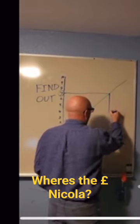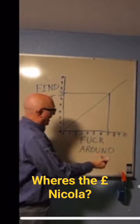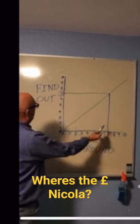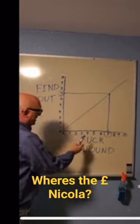I'm going to come straight down to where it intersects with my fuck around line. Now, that's going to tell me how much I have to fuck around to find out what I need to find out.